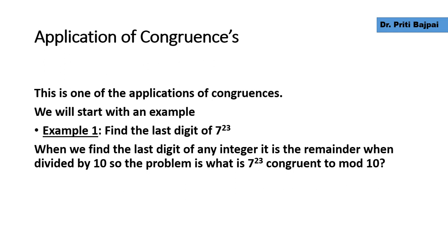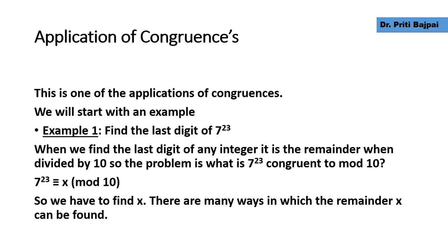What if we are asked to find the last digit of 7 to the power 23? That is, when we expand this number, what will be the last digit? In layman's language, we have to find the last digit of this integer when we divide it by 10. So the problem is: what is 7 to the power 23 congruent to mod 10?